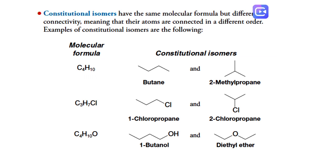The first example is butane. As you can see, the first one is a chain and the other is branched. They are different structures but have the same molecular formula. 1-chloropropane and 2-chloropropane: the chloro is attached to the primary carbon and here to the secondary carbon. They are different structures with the same molecular formula. The last one is 1-butanol and diethyl ether. They have four carbons, ten hydrogens, and one oxygen. These are constitutional isomers.